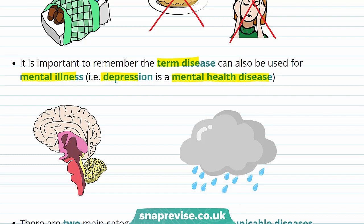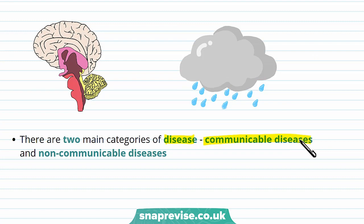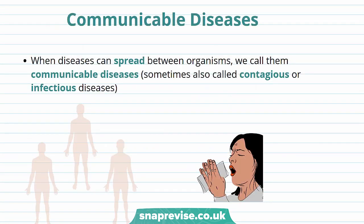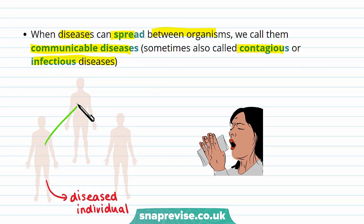Mental health diseases can also impact on your physical health. There are two main categories of disease: communicable diseases and non-communicable diseases. Communicable diseases are diseases that can spread between organisms, sometimes also called contagious or infectious diseases. A diseased individual can pass on his or her disease to other people. Diseases can also be spread from animals to people, and can be caused by bacteria, viruses, fungi and parasites.